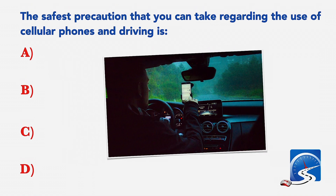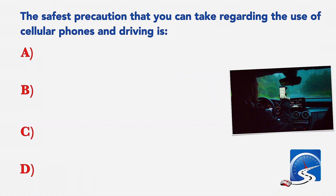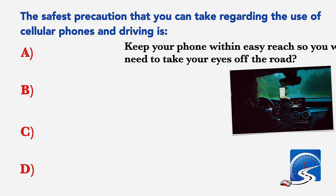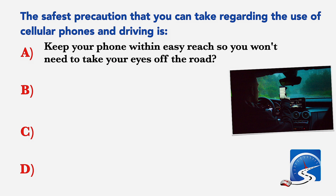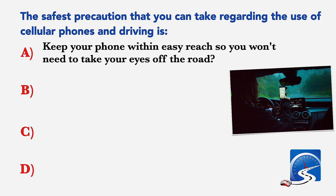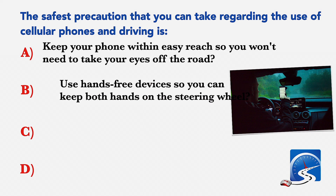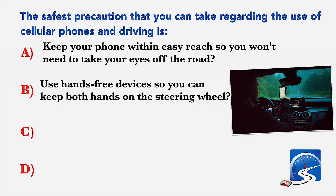The safest precaution that you can take regarding the use of cellular phones while driving is: A: Keep your phone within easy reach so you won't need to take your eyes off the road. B: Use hands-free devices so you can keep both hands on the steering wheel.